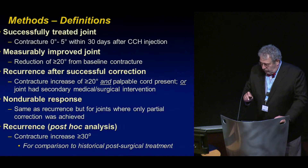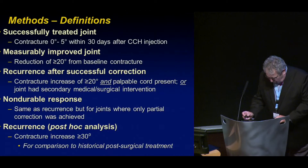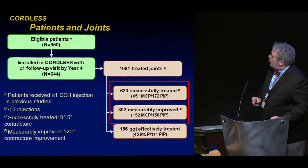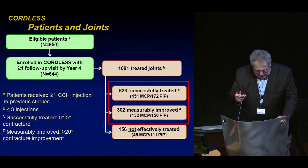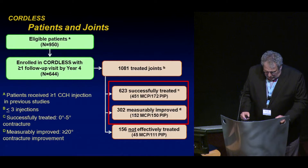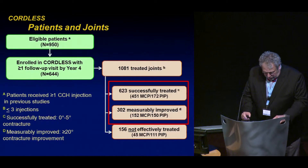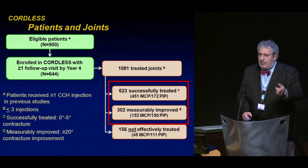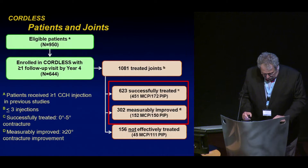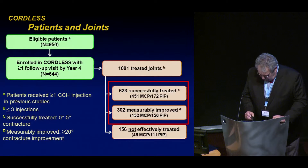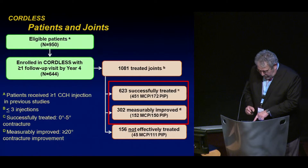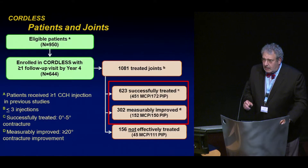We also did a post-hoc analysis to 30 degrees, which is the more commonly reported figure in the published literature, for historical comparison. There were 950 eligible patients who were enrolled with over 1,000 joints. The joints had received three or fewer injections — there were a couple of people who had to be excluded because they erroneously received more than three injections. Successfully treated and measurably improved joints are listed here, and in addition, there were 156 — about 12 percent — who were not effectively treated.